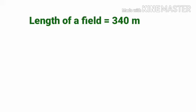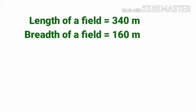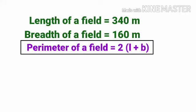So length of the field equals 340 m, breadth of the field equals 160 m. Perimeter of the field equals 2(l + b), equals 2 into 340 plus 160.